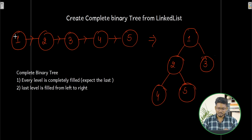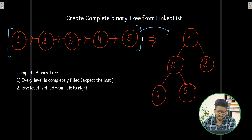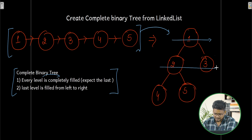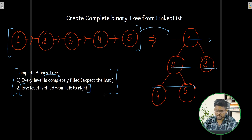So we are on the computer screen. They have given us a linked list and we have to convert it into a complete binary tree. A complete binary tree is a binary tree where every level is completely filled, except the last level, which is filled from left to right. That is the definition of a complete binary tree.